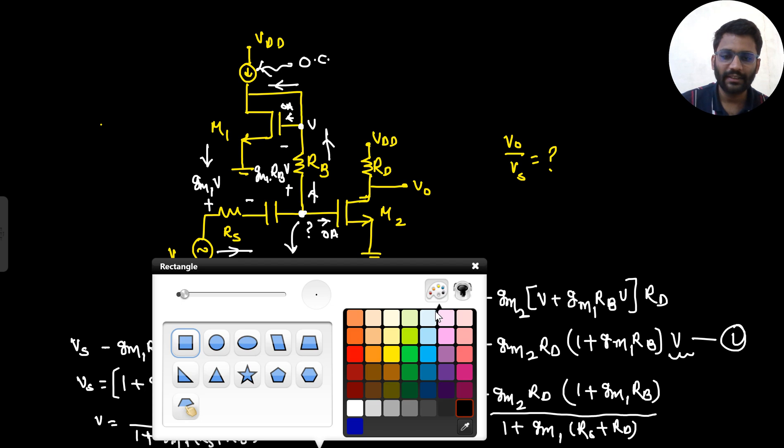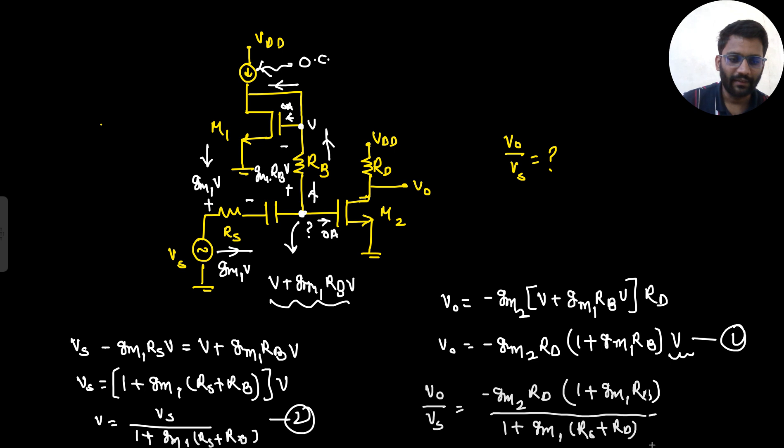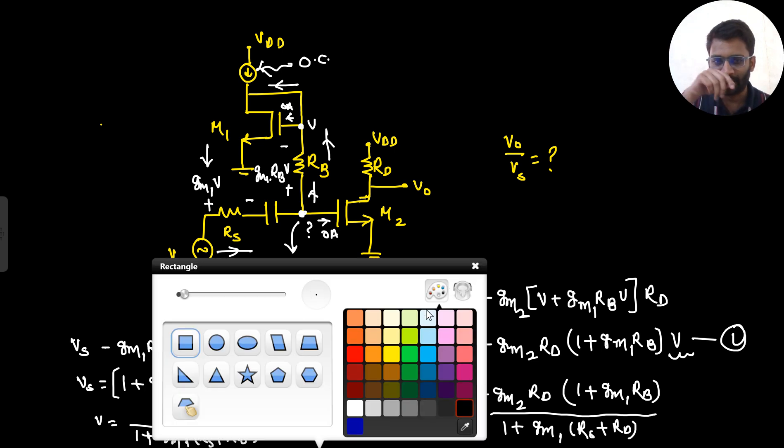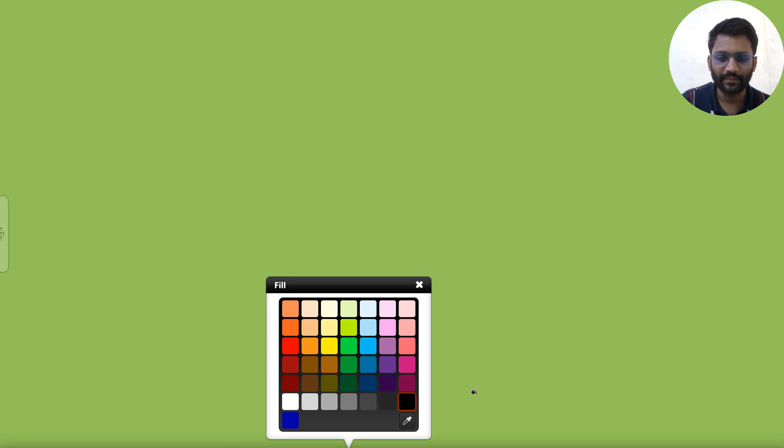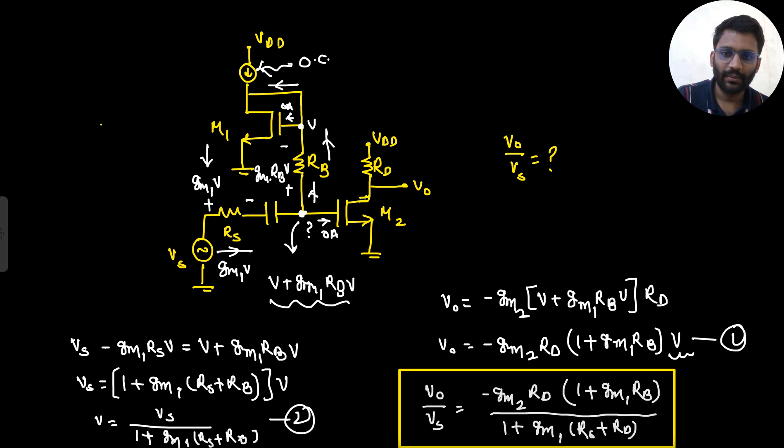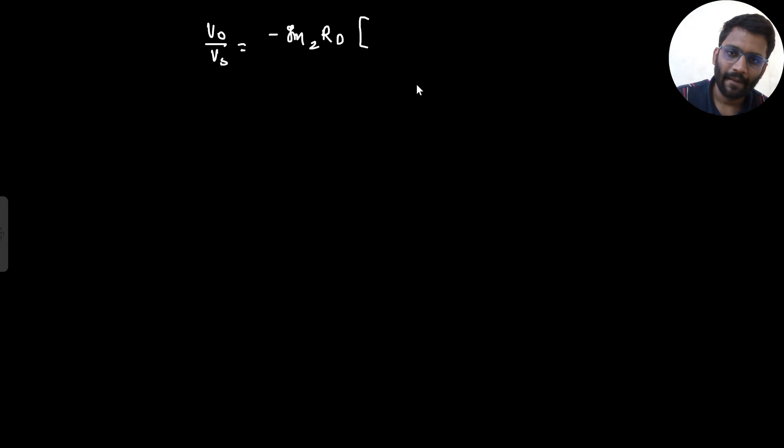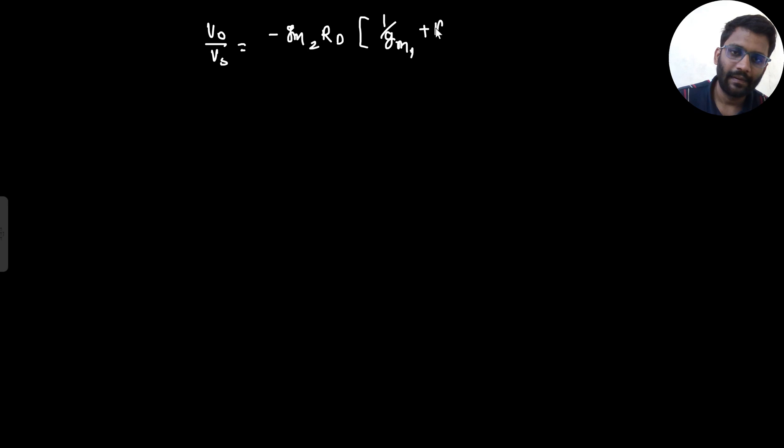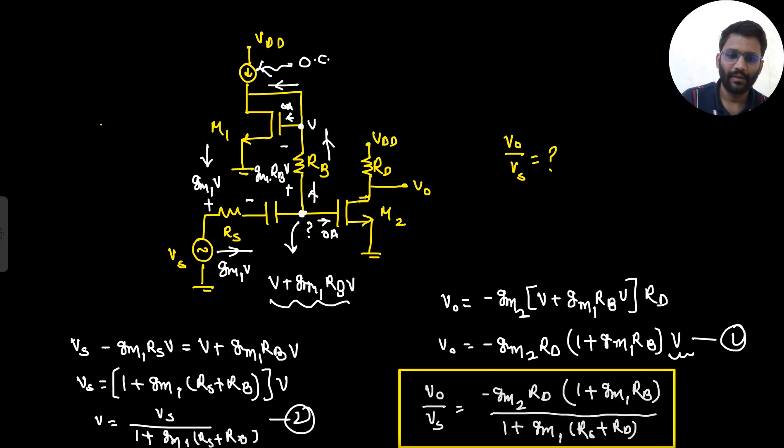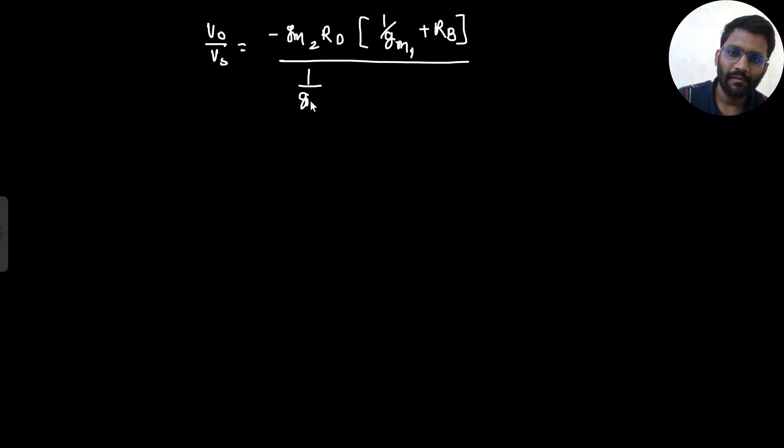This would be the answer but the answer was given in some different form. So let me write that form. I guess they divided by 1 by gm. As far as I am hearing from the students, they are saying that here 1 by gm was divided. So V naught by Vs was given minus gm2 Rd 1 by gm1 plus Rb upon 1 by gm1 plus Rs plus Rb. So this would have been the final answer.